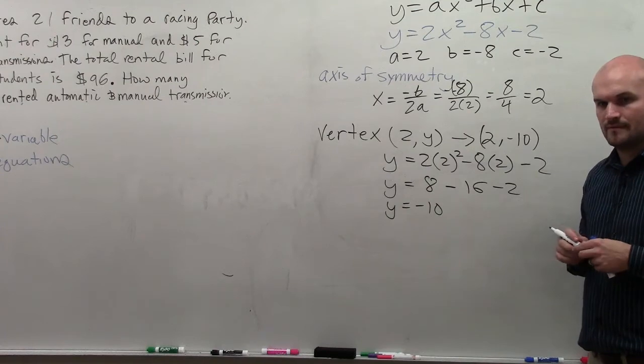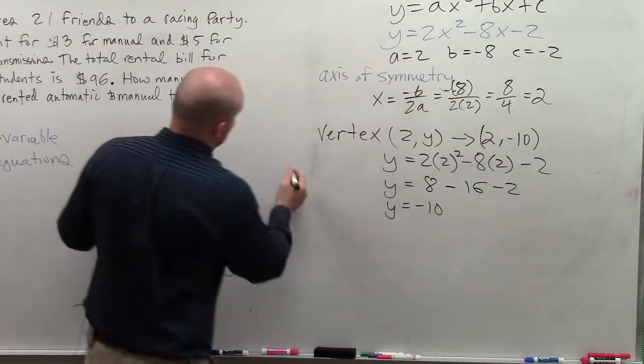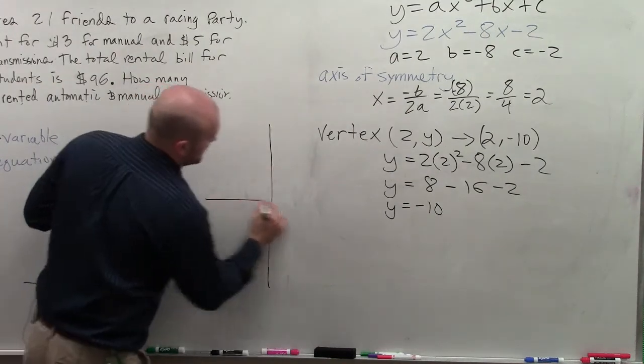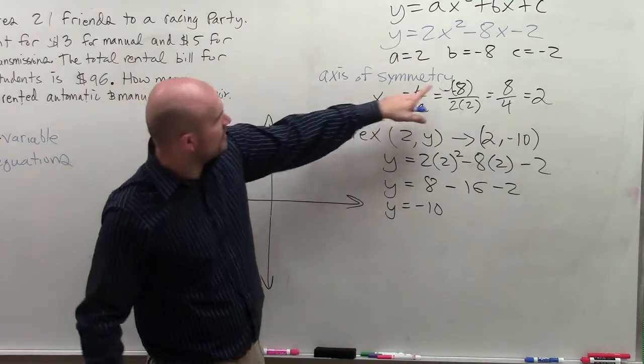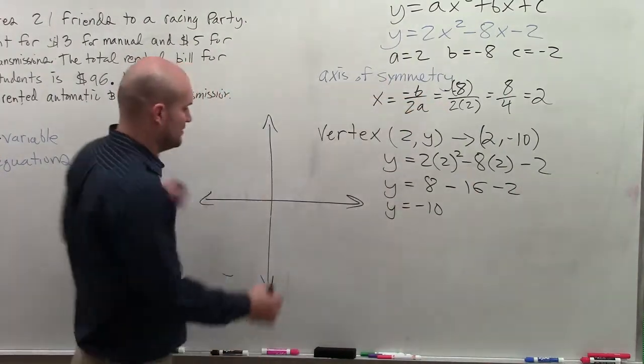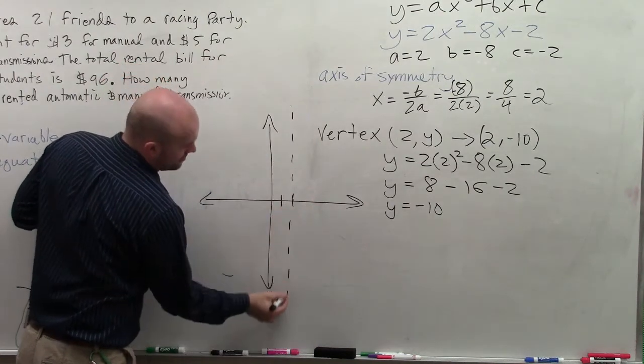Any questions on that? So now I have the vertex and the axis symmetry. I'm not done graphing yet. I'm not done. I still got to graph it. So my axis symmetry is x equals 2. So I go over to 2, and I draw my dashed line.